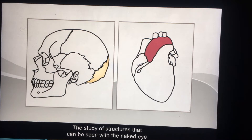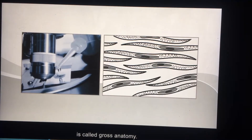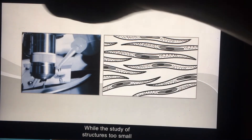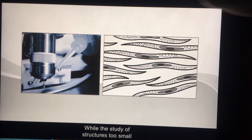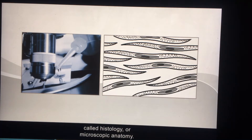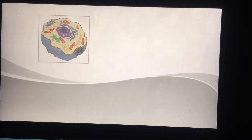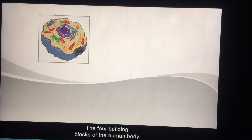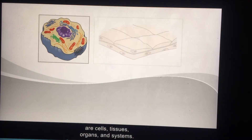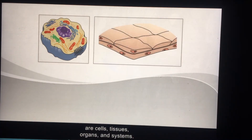The study of structures that can be seen with the naked eye is called gross anatomy, while the study of structures too small to be seen without a microscope is called histology, or microscopic anatomy. The four building blocks of the human body are cells, tissues, organs, and systems.